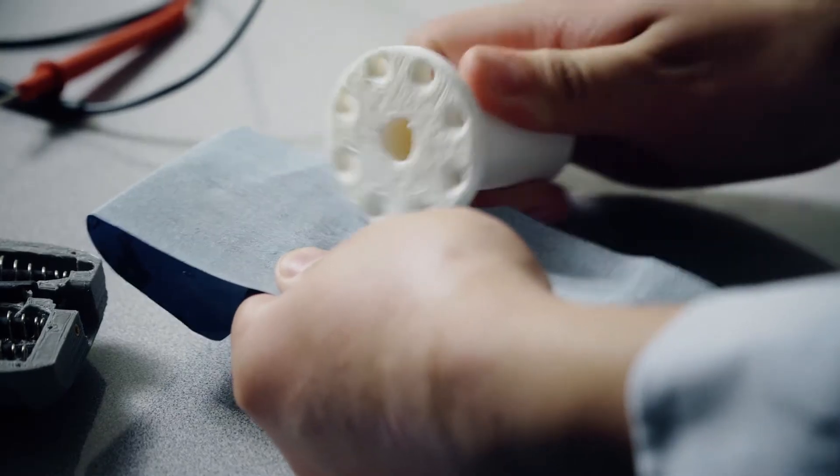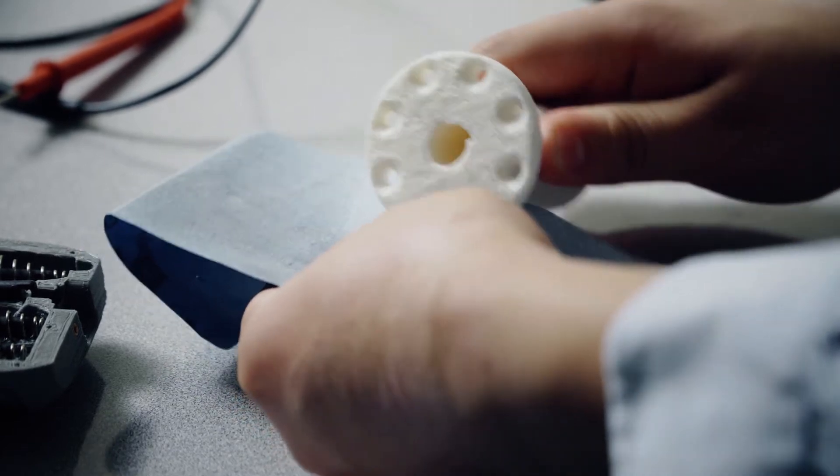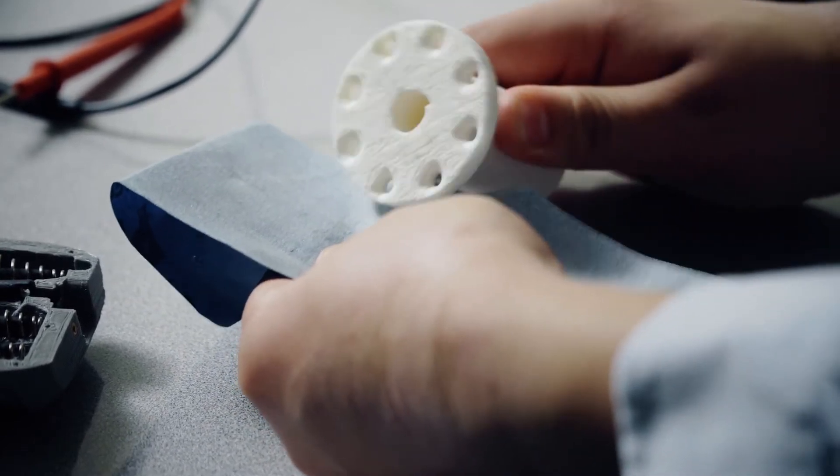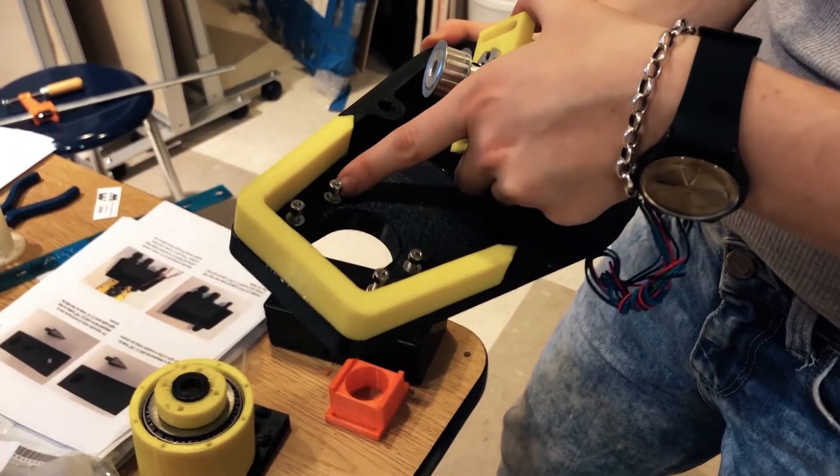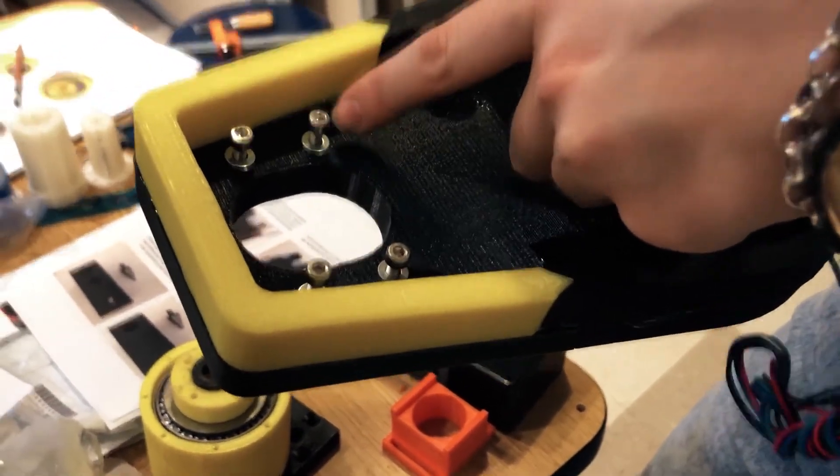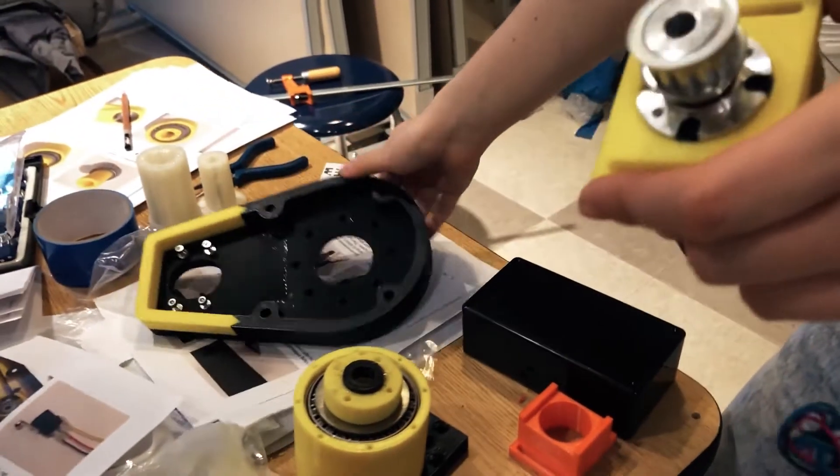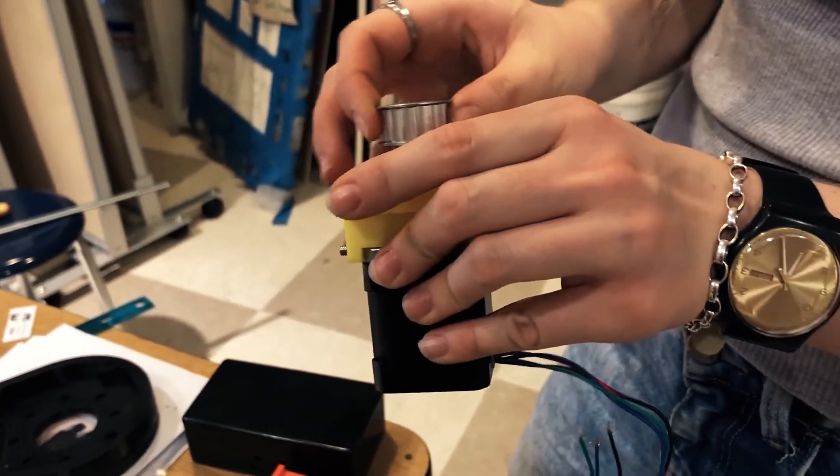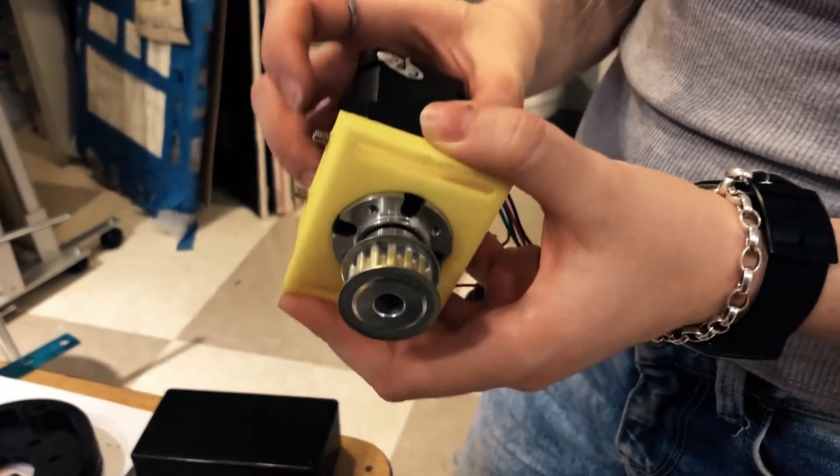Once we got the parts printed, we used sandpaper and heating tools to fix the printing artifacts. Then we attached the base to the table and carefully installed components like the stepper motors, sprockets, belts, limit switches, and bearings according to the specifications.